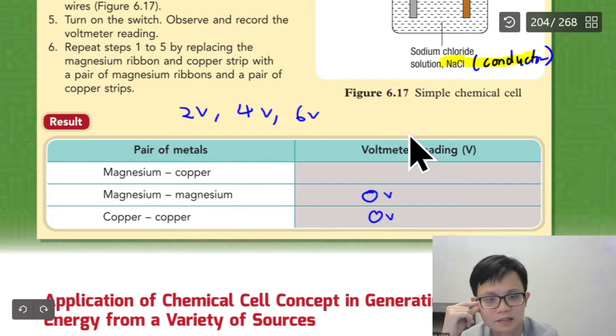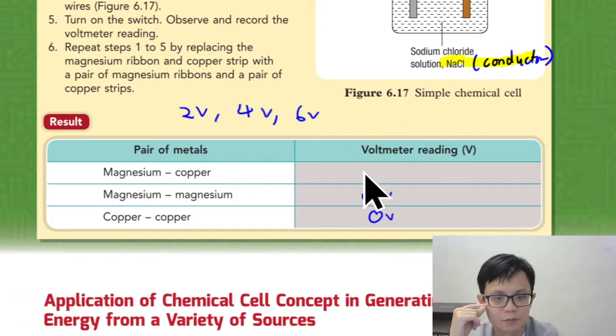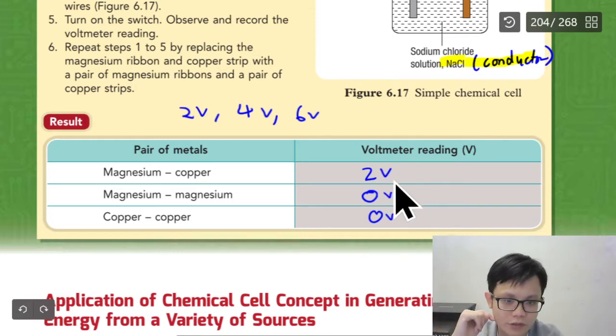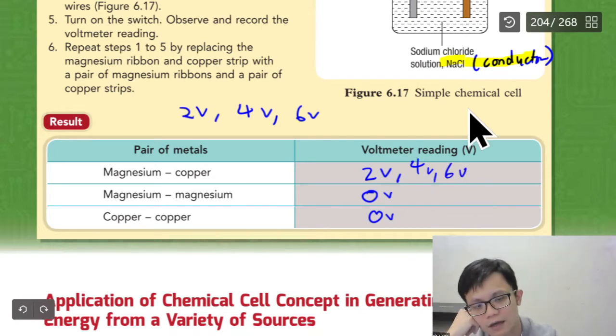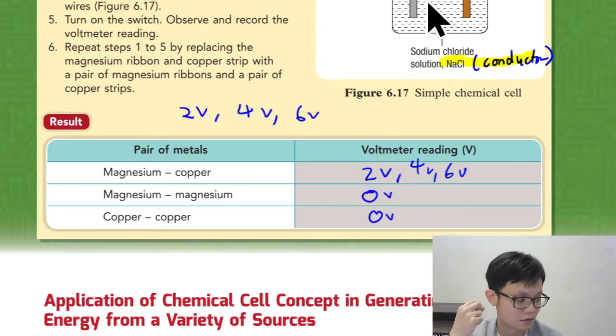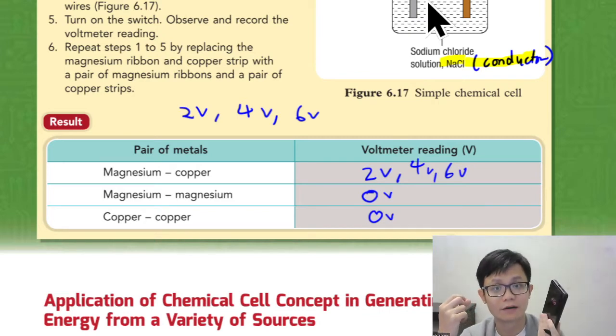This is different question. Magnesium, copper, let's say, give him 2 volt. So this will be the answer. Up to you, you want to put 2 volt, 4 volt, 6 volt. I think 2 volt should be enough. Because I think the battery you buy is 1.5 volt. Like your phone battery, power bank, 2 ampere, 5 volt.